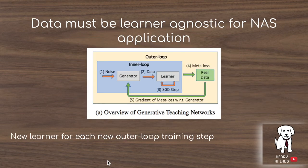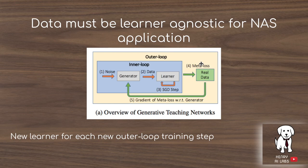The data has to be learner-agnostic for neural architecture search applications. The idea is that if you use the same learning network in the inner loop for every step, you'll optimize the dataset for just that one network. So they switch out the learning network in the training loop of the generative teaching network. Every time they complete the inner loop and go to the outer loop for a signal from the real training data, they switch in a different learning network.